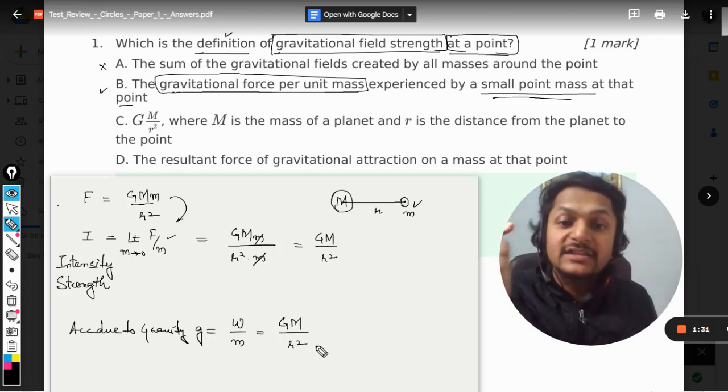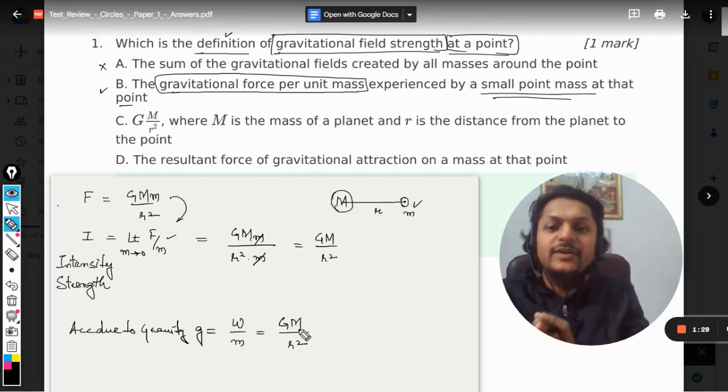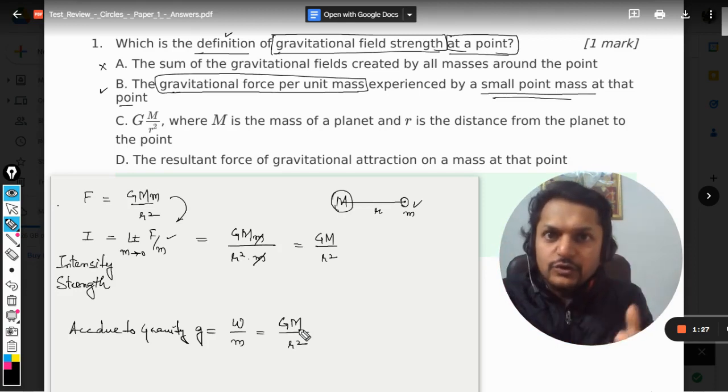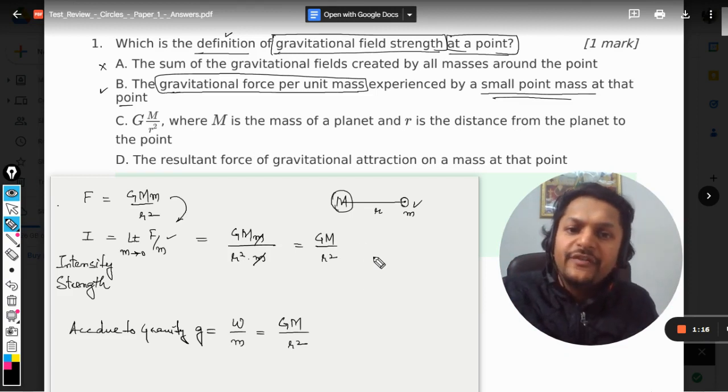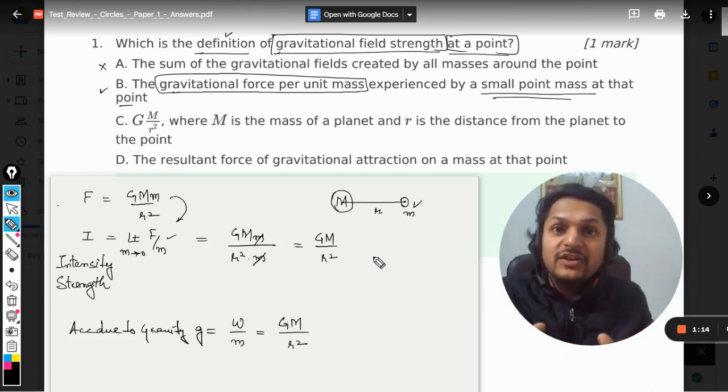Now this is where students get confused like what the hell now, because acceleration due to gravity is having the same formula, intensity is also having the same formula. And what are these two things? This is like it tries to define the gravitational field around a mass and the unit for this will be newton per kg.